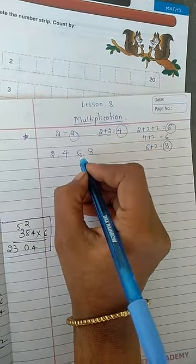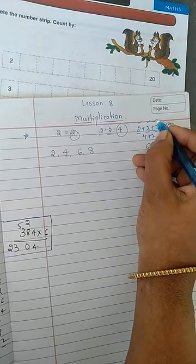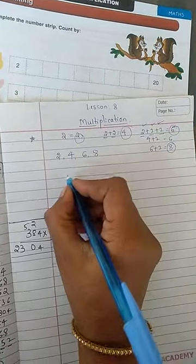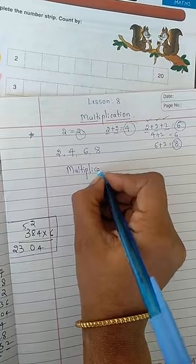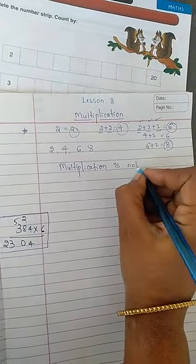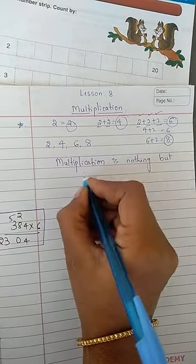2 threes are 6 means what? 2 you are adding how many times? 1, 2, 3. 2 three times if you add you will get 6. So that multiplication is nothing but repeated addition.